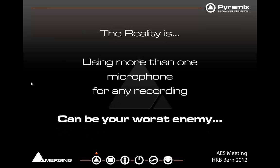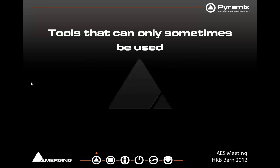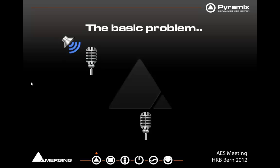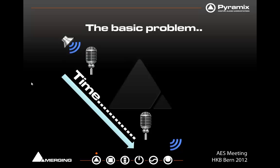The reality is, using more than one microphone for any recording can actually be your worst enemy. But of course, nowadays with multi-track recording, we need to find a solution for this. We use isolation, separation, and approximation, but all of these are only partially effective and can only sometimes be used. Here's the basic problem: we have a single source and two microphones split apart from one another, and the time difference between the arrival of the first microphone and the second microphone involves a phase offset in a final stereo mix.